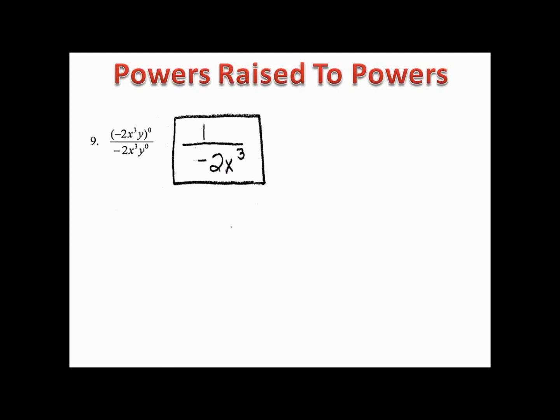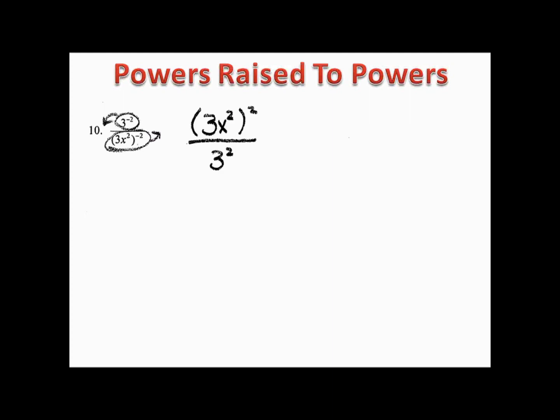Example ten is pretty interesting. I began by moving things with negative exponents: 3⁻² was on top, so I put it on the bottom; (3x²)⁻² was on the bottom, so I moved it up to the top. Squaring everything on top gives us 3²x⁴. In the bottom we have 3². Since 3² is 9 and 9 divided by 9 is 1, we're simply left with x⁴.